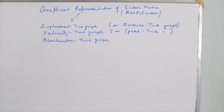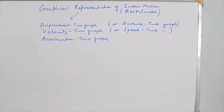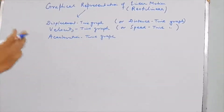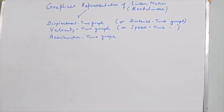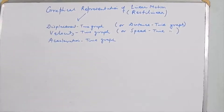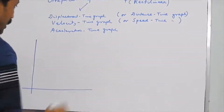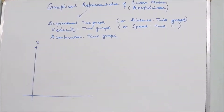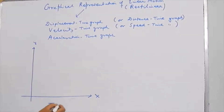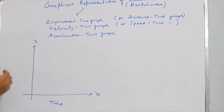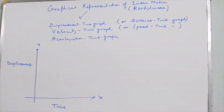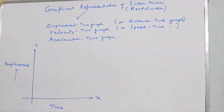Remember that as we are discussing motion in a straight line, displacement-time and distance-time graphs are the same, and velocity-time and speed-time graphs are the same, because the direction of motion is not changing. The displacement-time graph plots displacement along the y-axis and time intervals along the x-axis.